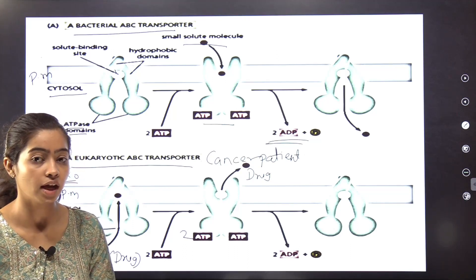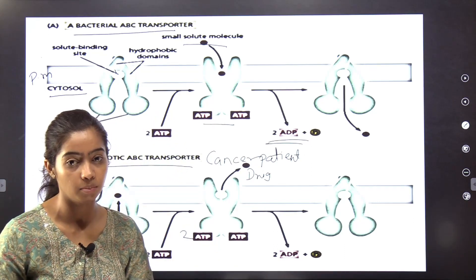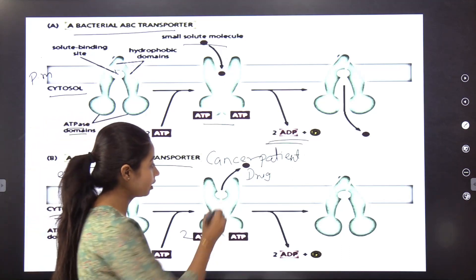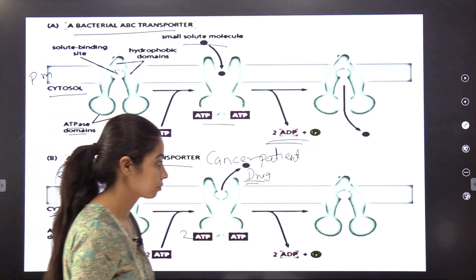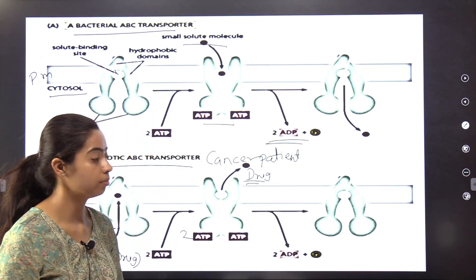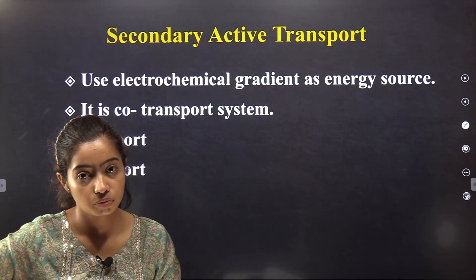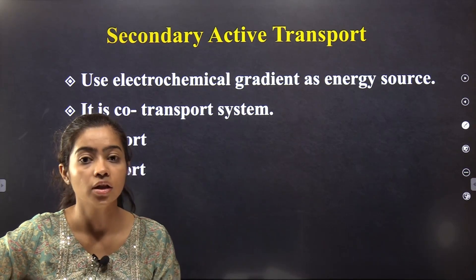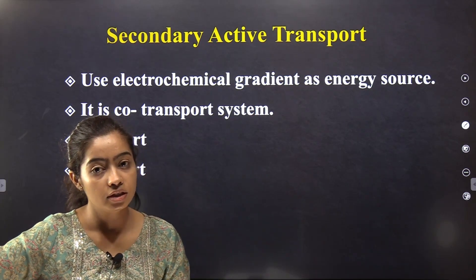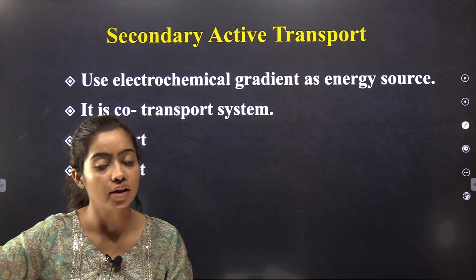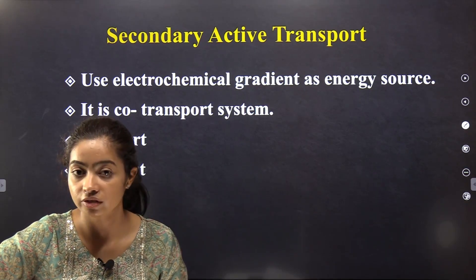In bacteria, ABC transporters work for nutrient uptake, whereas in eukaryotes they work as MDR proteins, effluxing drugs out of the cell. This completes the primary active transport section, which has four types of pumps: P-type pump, F-type pump, V-type pump, and ABC transporter.